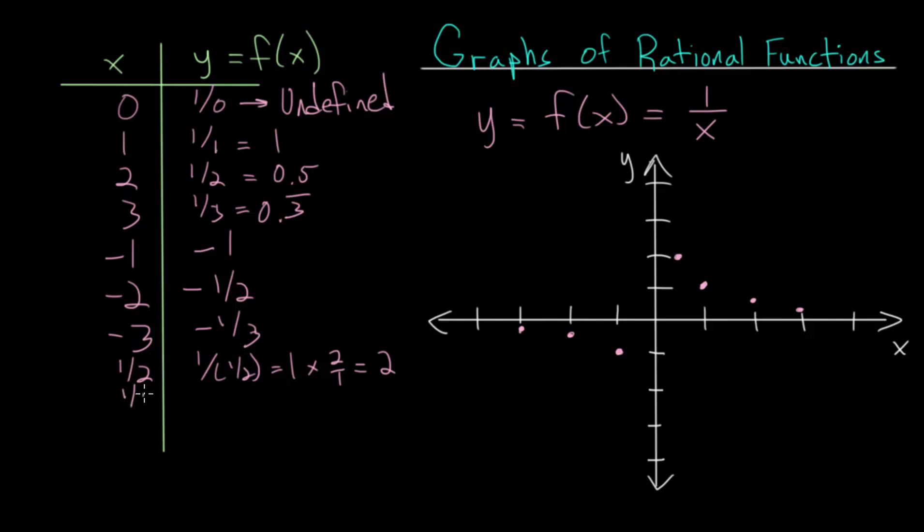If we put in, let's say, 1 fourth, then it would be 1 divided by 1 fourth. If you follow this pattern, that would end up with 1 times 4 over 1. So when you plug in 1 fourth, that's just equal to 4. So at 1 fourth, let's say right about there, it's all the way up at 4.